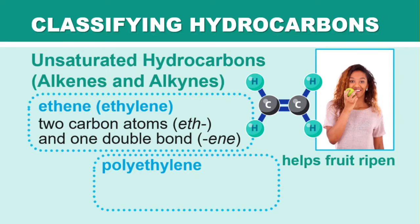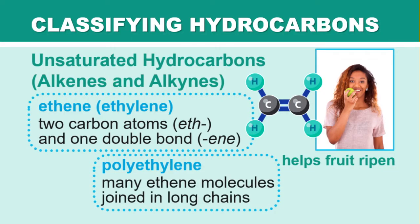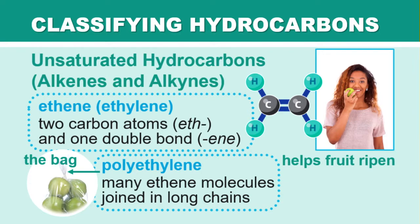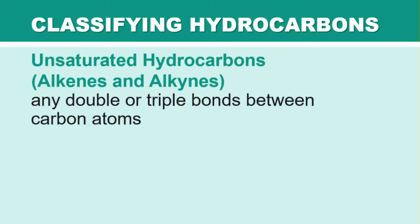Polyethylene — 'poly' means many — is what you get when you repeat the ethene two-carbon double bond unit over and over to make a long chain. Polyethylene is literally the plastic bag that fruit goes into. That long chain of ethene molecules forms the thin but three-dimensional structure of the bag.